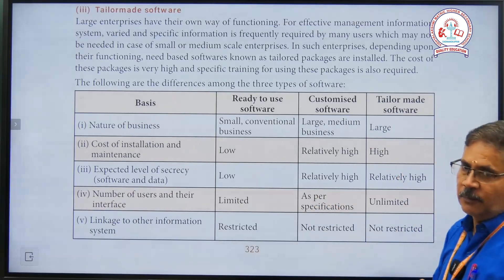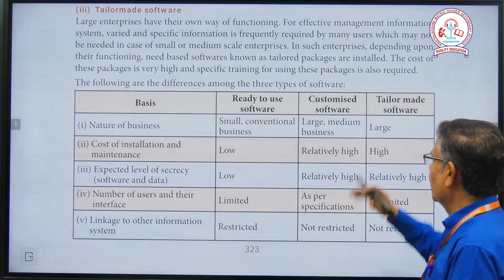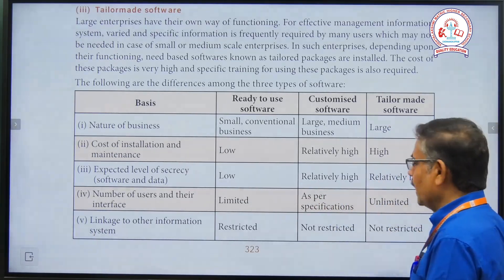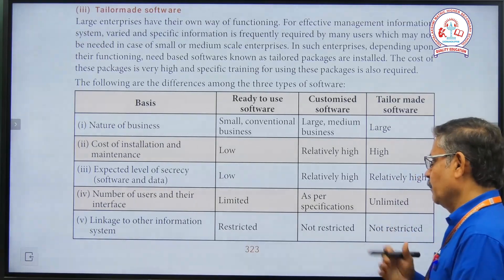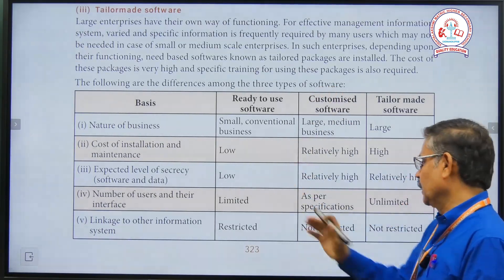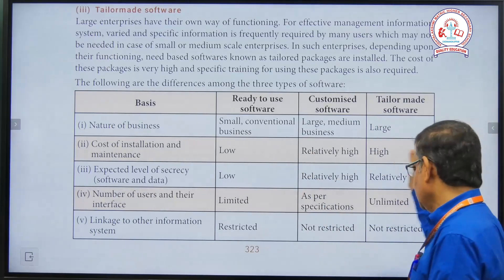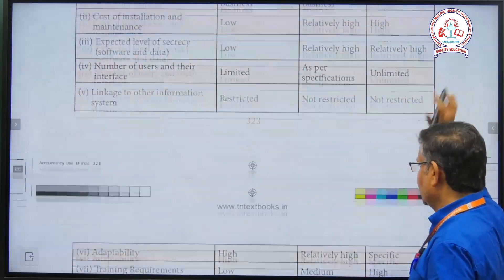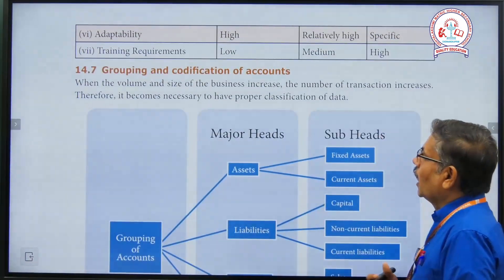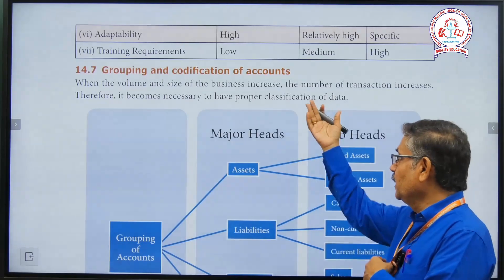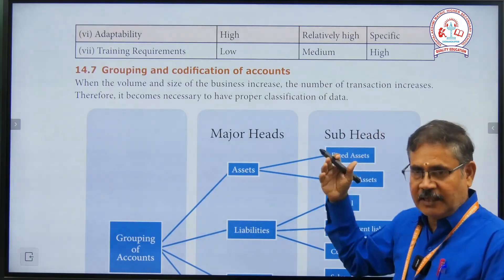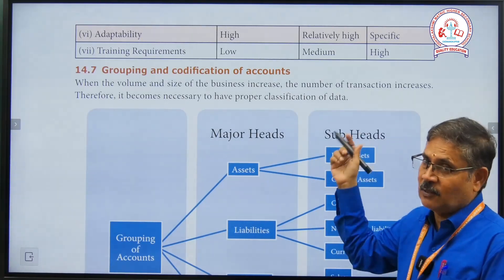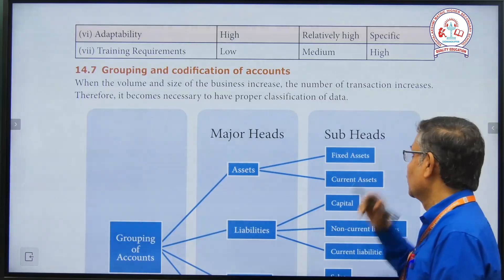For number of users, readymade is limited, customized is as per specification — unlimited linkage. Linkage is not restricted for readymade, not restricted for customized, and not restricted for tailor-made. For adaptability, readymade is specific, while tailor-made offers full adaptability.